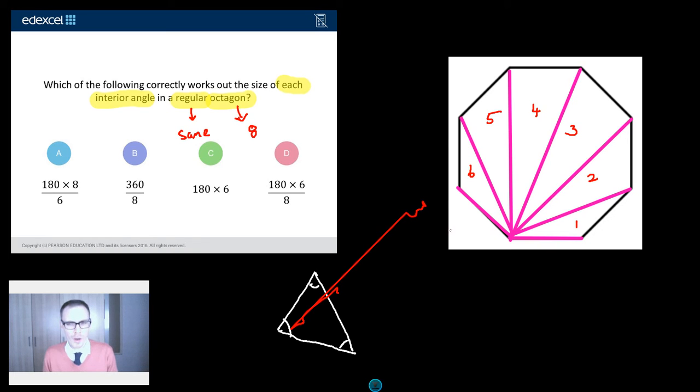Now, what do I know about triangles? Well, hopefully, I know that the sum of the interior angles of a triangle, no matter what that triangle is, is always 180 degrees. And this shape is made up of triangles, entirely of triangles. How many triangles have I got? Six.